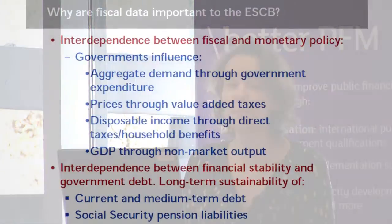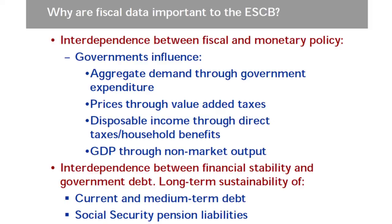Fiscal data are important to the ECB because there is an interdependence between fiscal and monetary policy. Governments influence aggregate demand through government expenditure and thereby influence the general price level. Governments also directly influence prices through their value added taxes, and influence disposable incomes through direct taxes or household benefits, and thereby also influence demand and the price level. Governments' non-market output also influences GDP.